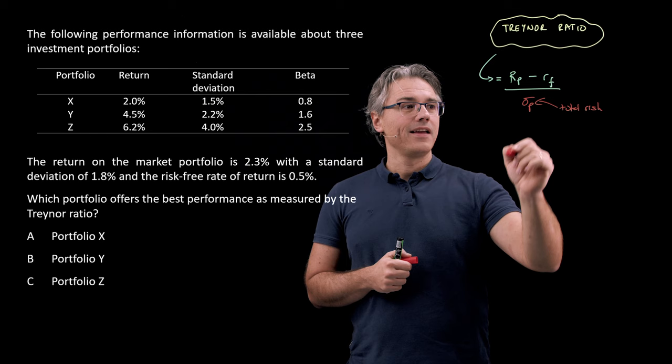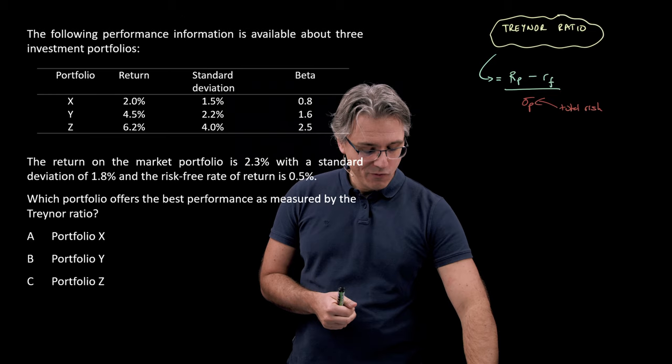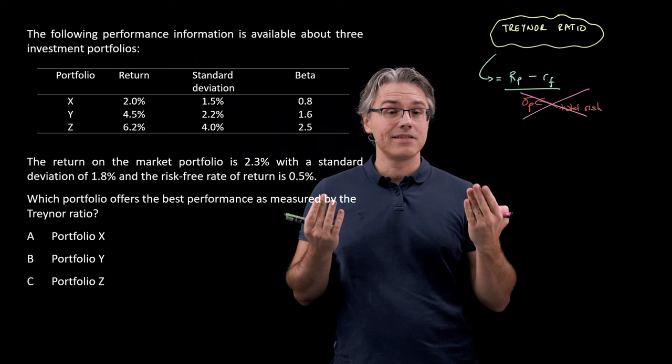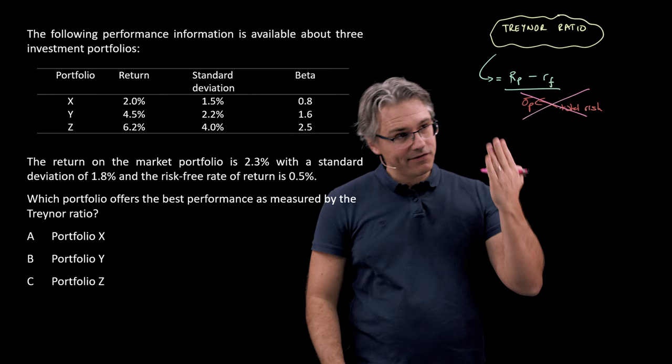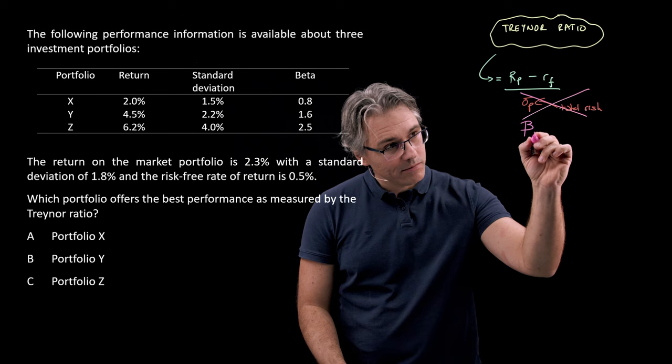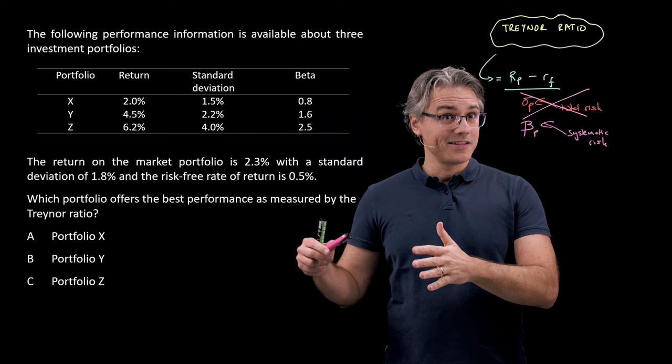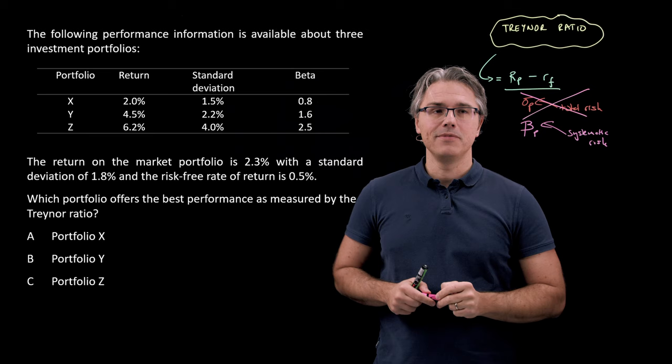But with the Treynor ratio, we don't care about total risk anymore. We're in a world of CAPM, the capital asset pricing model, and we care about systematic risk only. So instead of having total risk, I'm going to have a measure of systematic risk, which is the beta of the portfolio. This is a measure of the return in excess of the risk-free rate as related to the amount of systematic risk that we take on to get this extra return. And that's how we derive the Treynor ratio.